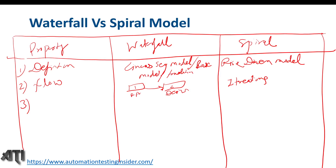The third property is customer involvement. In the waterfall model, customer involvement is very minimal because the steps and everything are fixed. In the spiral model, customer involvement is more, because the customer has awareness of what the product is at each stage.